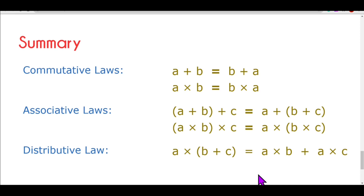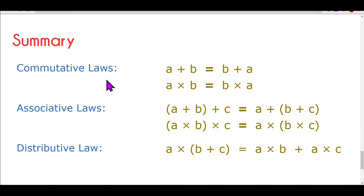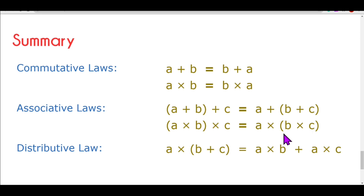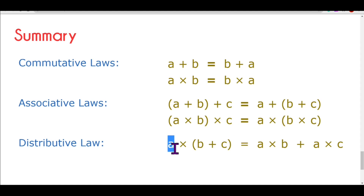Let's summarize the first three laws. First, commutative law: we can swap numbers and get the same result — a plus b equals b plus a, and a into b equals b into a. Second, associative law: we group the numbers — (a + b) + c equals a + (b + c) for addition, and (a × b) × c equals a × (b × c) for multiplication. Third, distributive law: a into (b plus c) means the number outside the bracket is distributed to all numbers inside, giving a into b plus a into c.